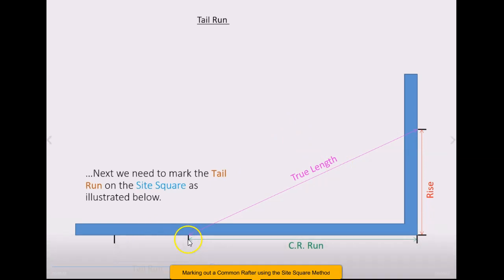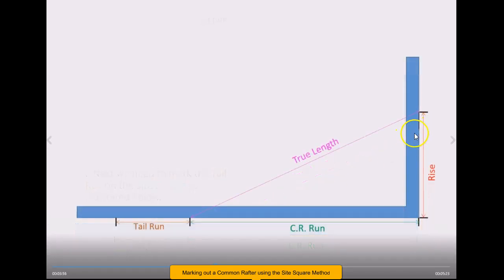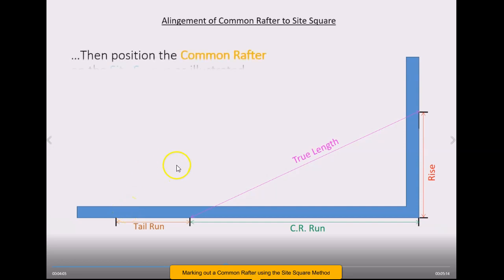Here's your tail run then, usually from the outside of the wall plate out to here is the horizontal distance again. As I said, you have mapped that on your site square and usually you label that as well here. You know that this is the rise and this is the common rafter run, this is the tail when you put it out.